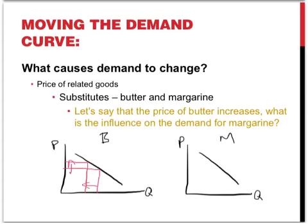But what happens to the demand for margarine? If people are using a smaller quantity of butter, it means they still have to put something on their bread. So the demand for margarine increases — the whole demand curve moves to the right. In fact, more margarine is demanded at every price: for the expensive brands, more is demanded, and for the cheaper brands, a greater quantity is demanded. So an increase in the price of a substitute leads to an increase in the demand for the product you are examining.